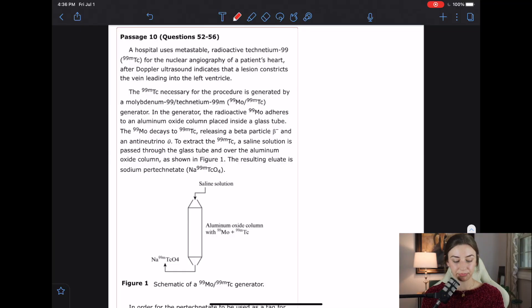Oh, I don't like the look of this already. So first let's read the passage and flowchart what we can. A hospital uses metastable radioactive technetium-99 for the nuclear angiography of a patient's heart after Doppler ultrasound indicates that a lesion constricts the vein leading into the left ventricle. I can't flowchart anything on that yet.